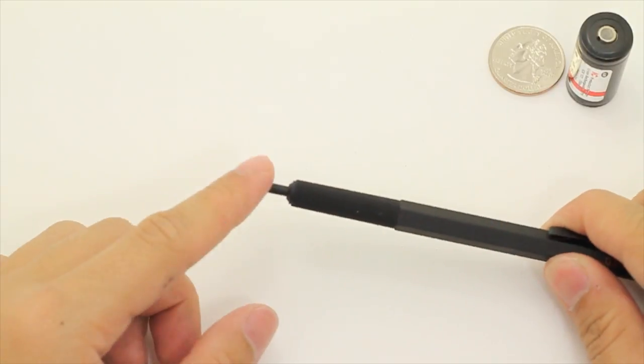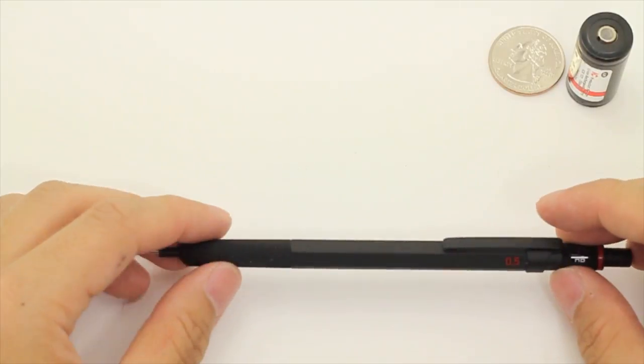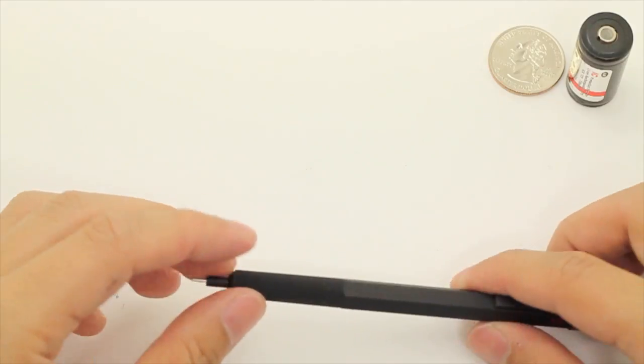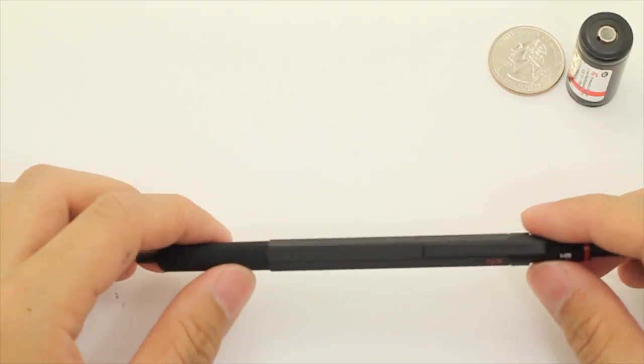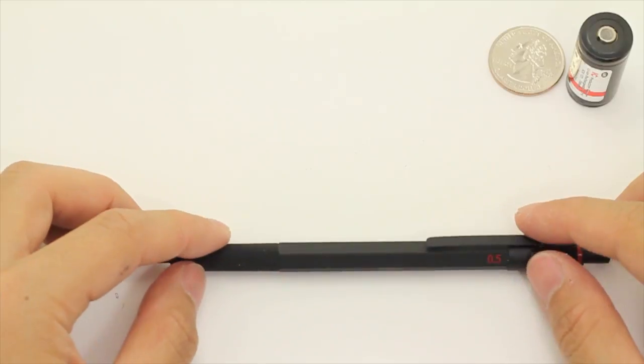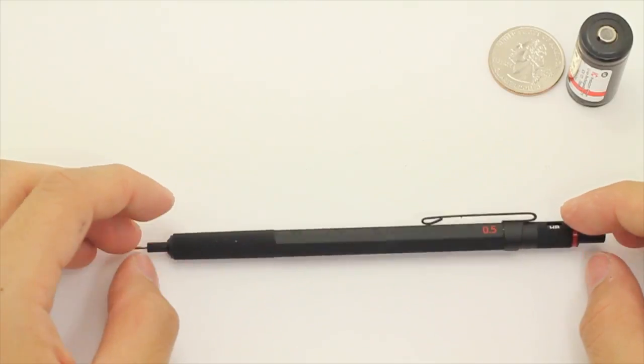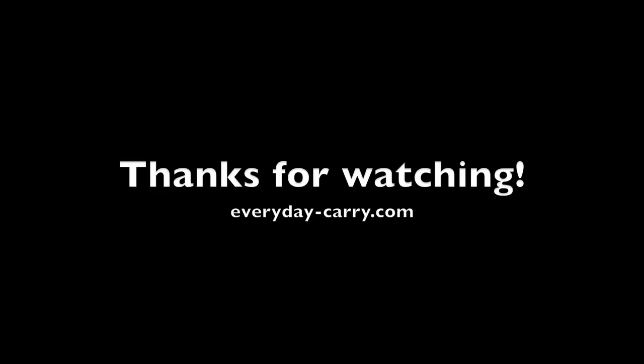If you like this pencil but you're worried about the tip, you should look into the Rotring 800, I believe, which has a retractable tip as well as gold accents. So it's a little bit more expensive, maybe double the price if not more. For the full review, head on over to everyday-carry.com.